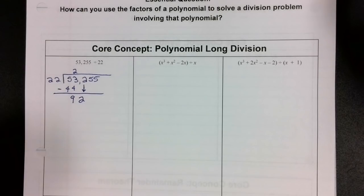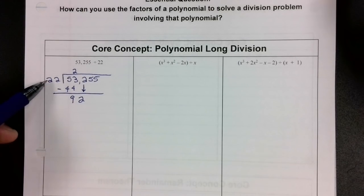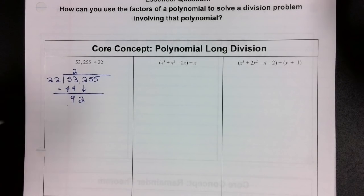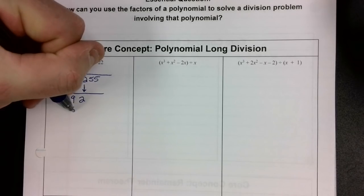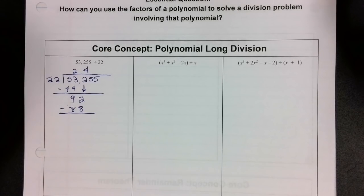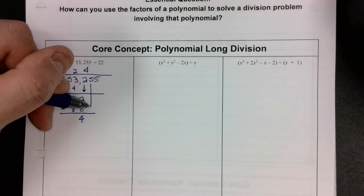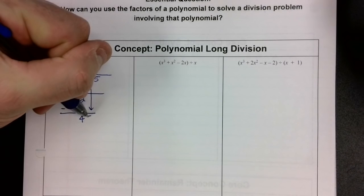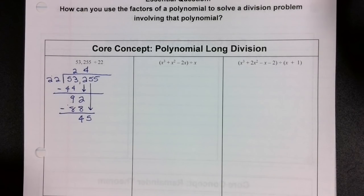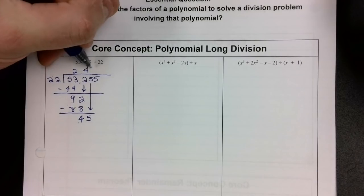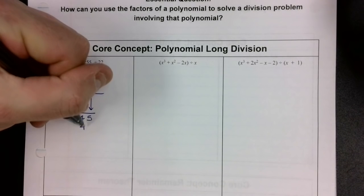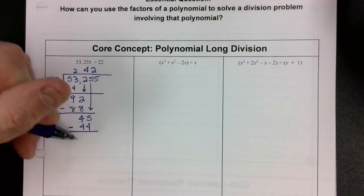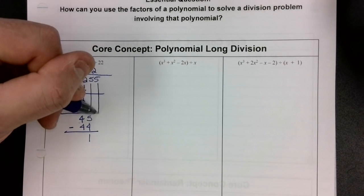We repeat the process: how many times does 22 go into 92? That answer is 4. And then how many times does 22 go into 44? The answer is twice. 2 times 22 is 44. Subtract, and we get 0. Then bring down the last 5, and we have 15.